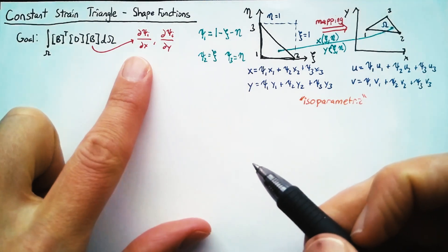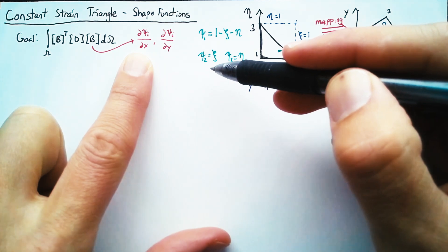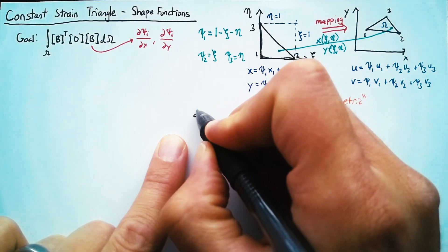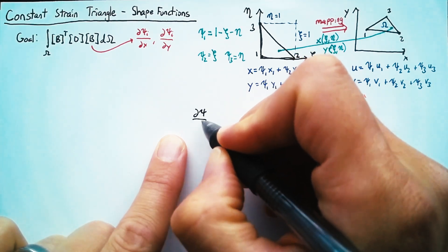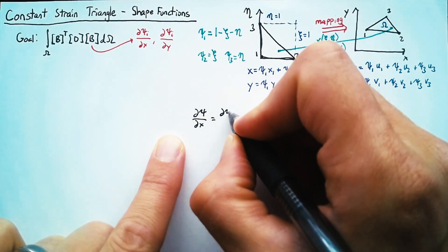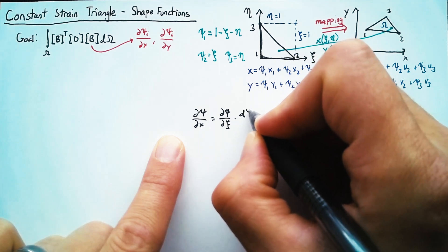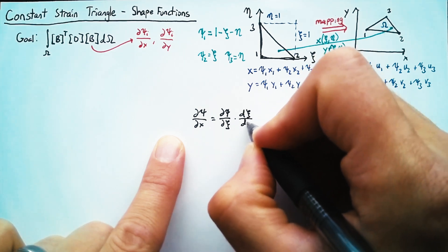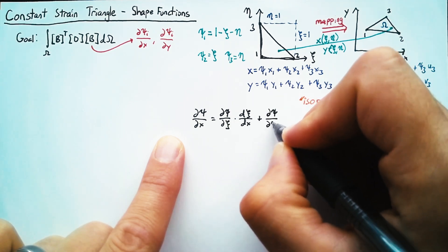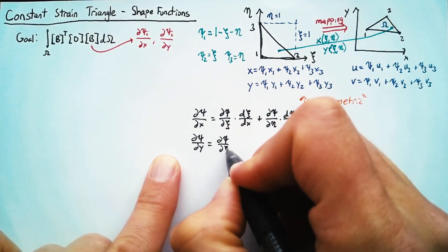Now, again, our goal is to find the partials of these Psis with respect to x and y. So let's give that a try. We're going to take dPsi/dx and expand it using the chain rule. So we get dPsi/dC multiplied by the derivative of C with respect to x. And then we add in the contribution from eta as well. The y-derivative looks very similar.